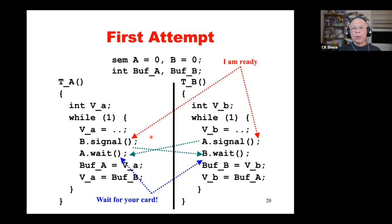We will show four attempts, each better than the previous one. These solutions were taken from student exam papers when I taught operating systems courses. This is the first solution, which is the worst. We have two semaphores A and B, both initialized to zero, and two buffers — buffer A holds the message generated by process A, and buffer B holds the message generated by process B.